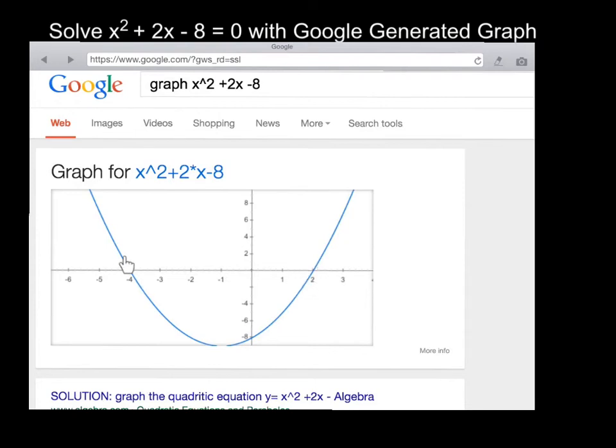So my solutions are going to be negative 4 and positive 2. And I could check that by plugging those values into the original equation, and it should in fact equal 0. Hope that helps. Thank you.